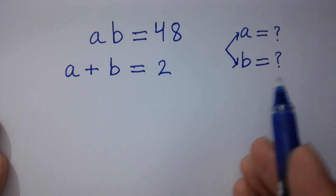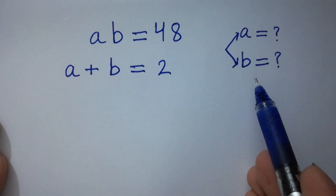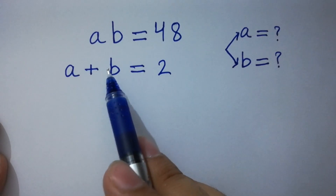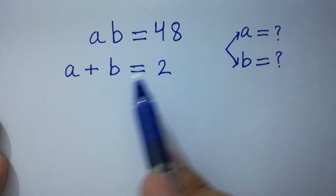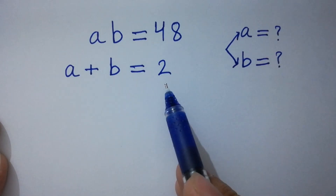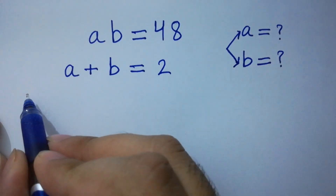Hello friends, find the value of a and b if ab equals 48 and a plus b equals 2. Let's have a solution.